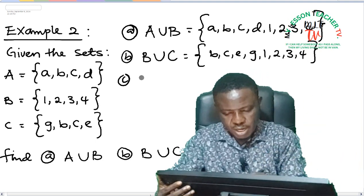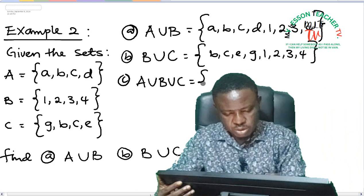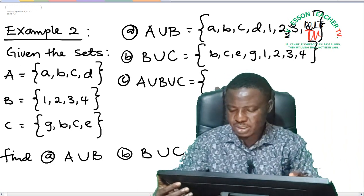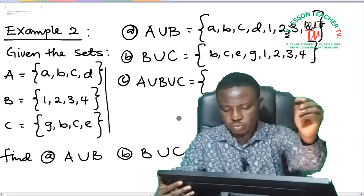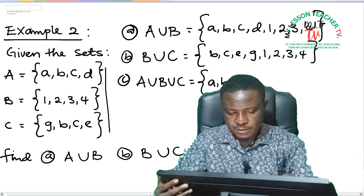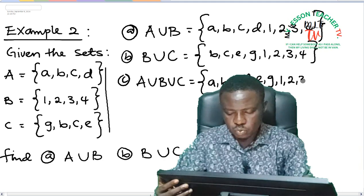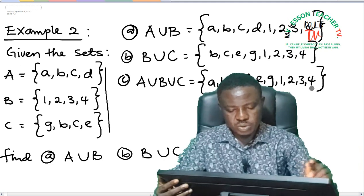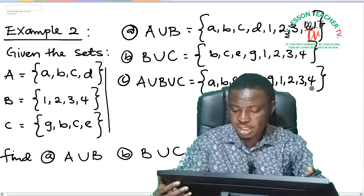C says we should have A union B union C, meaning all the elements in A plus all the elements in B plus all the elements in C, just like we have it here. So this is going to be, I'm going to write them without repetition, so we have {a, b, c, d, e, g, 1, 2, 3, 4}. So this is the union of three sets A, B, and C.